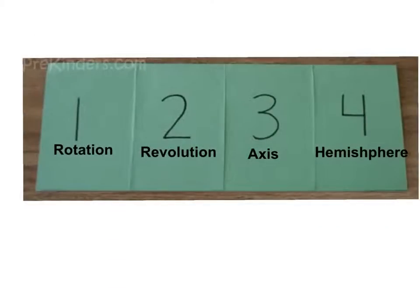The first thing that you need to do is label those four flaps: rotation, revolution, axis, and hemisphere. If you need to pause the video, do that now and then play when you're ready to move on.